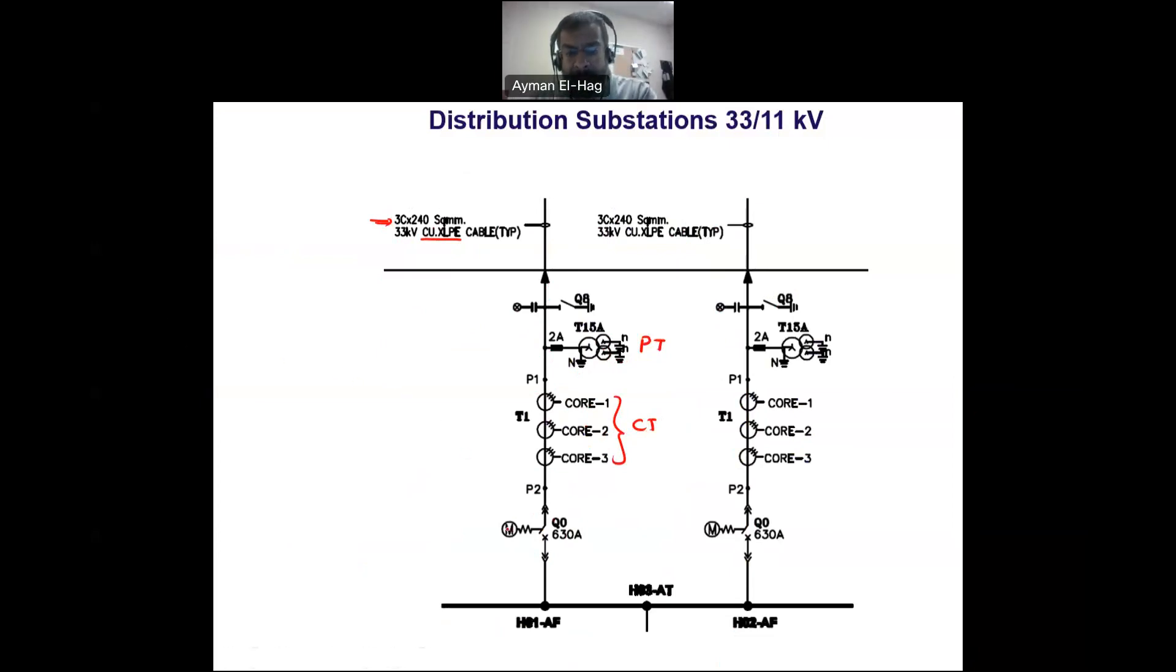Then here we have M, which is for a motorized circuit breaker. This is to switch on and off your circuit breaker. And this is 630, which is the rating of the short circuit rating of the circuit breaker.